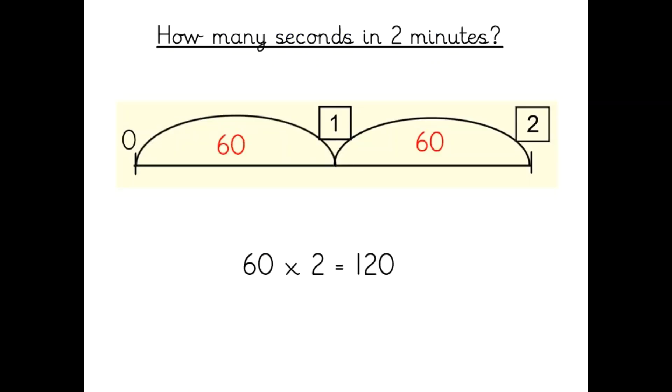You can also use a number line to answer this question. You can jump up 60 seconds to get to one minute and jump another 60 seconds to get to two minutes. So two lots of 60 seconds is 120 seconds.